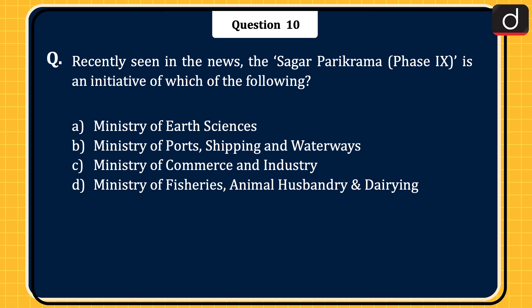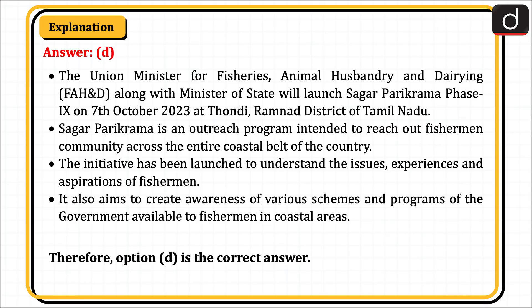The last question, recently seen in the news: Sagar Parikrama Phase 9 is an initiative of which of the following — Ministry of Earth Sciences, Ministry of Ports Shipping and Waterways, Ministry of Commerce and Industry, or Ministry of Fisheries Animal Husbandry and Dairying? The correct answer is option D, Ministry of Fisheries Animal Husbandry and Dairying. The Union Minister launched Sagar Parikrama Phase 9 on 7 October 2023 at Thondi, Ramanathapuram district, Tamil Nadu. Sagar Parikrama is an outreach program intended to reach the fishermen community across the entire coastal belt of the country, to understand their issues and aspirations and create awareness of government schemes available to coastal fishermen. Therefore, option D is the correct answer.